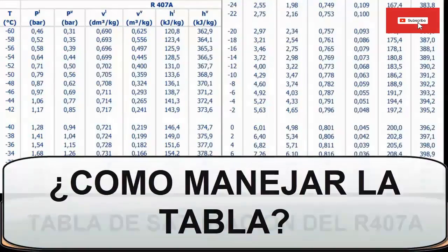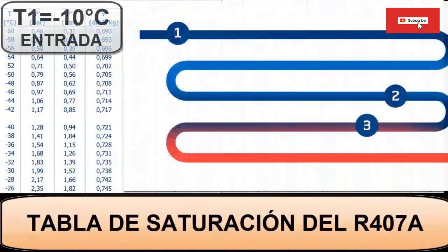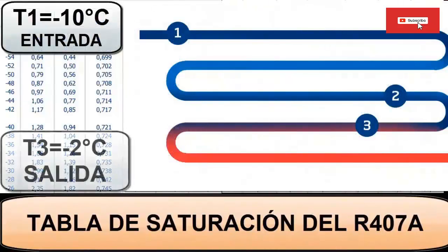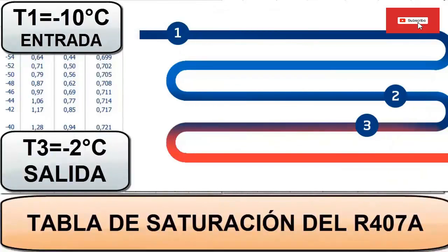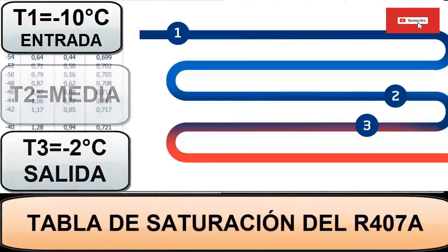Key one: the average evaporation temperature of R407A is located between the temperature at which the refrigerant begins to boil at the outlet of the expansion device and at which it stops boiling at the end of the evaporator. Key two: the R407A average temperature glide is used to find the pressure and thereby obtain the average cold temperature. Key three: for the calculation it is considered that the pressure drop in the evaporator is practically zero.